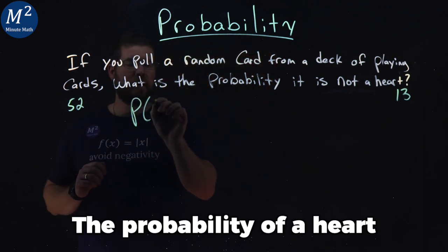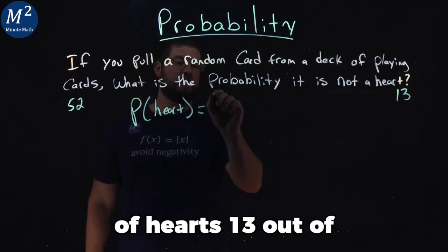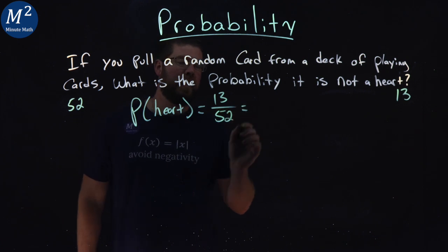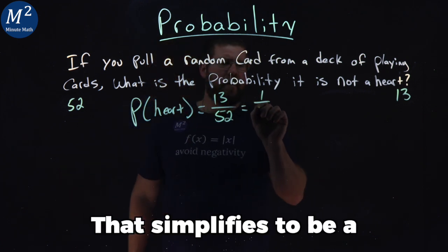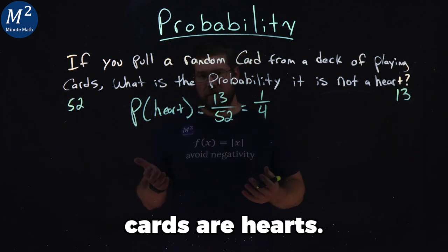So the probability of a heart is equal to the number of hearts, 13, out of the total number of cards in a deck, 52. That simplifies to one-fourth. A quarter of the cards in a deck are hearts.